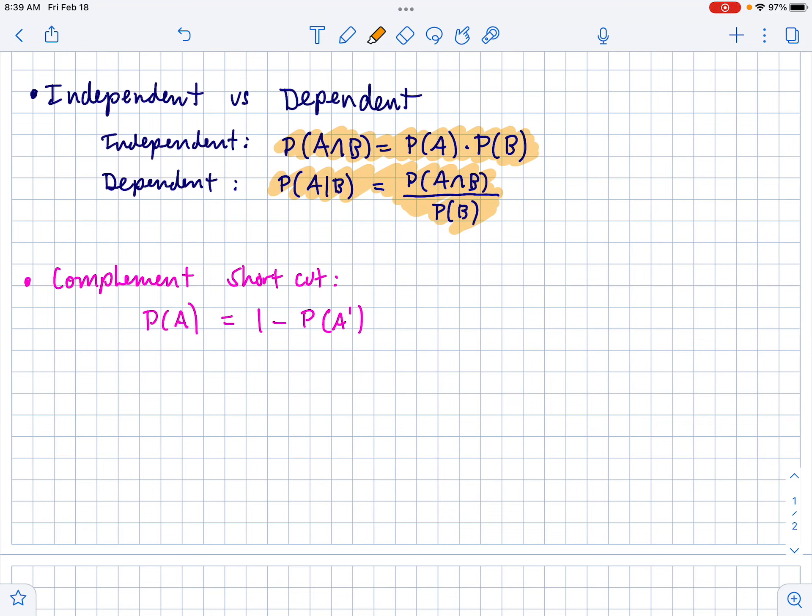One of the last things we got to is that sometimes if you're trying to figure out all the different ways something can happen in a problem, sometimes it's shorter to just subtract out the intersection from one. So the probability of A happening is one minus the probability of A not happening.